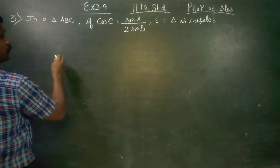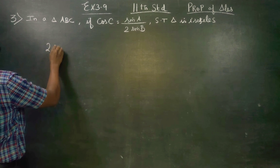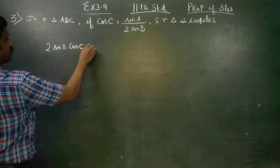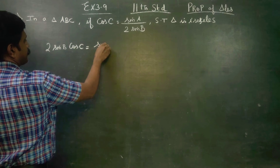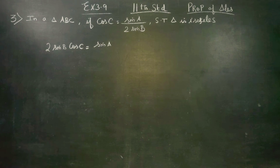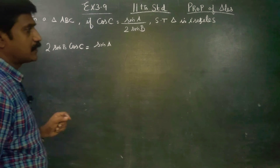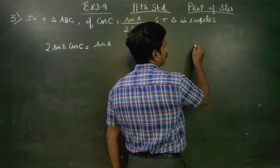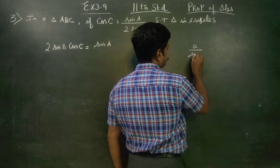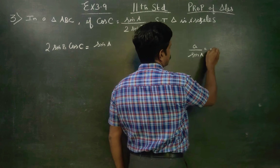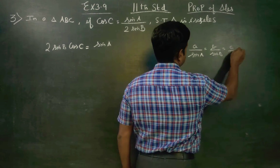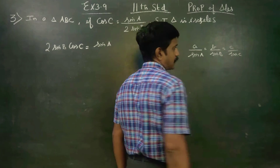First, I will cross multiply: 2 sin B cos C is equal to sin A. I am cross multiplying 2 sin B with cos C. After this, we will use the law of sines: a by sin A is equal to b by sin B is equal to c by sin C is equal to 2R.